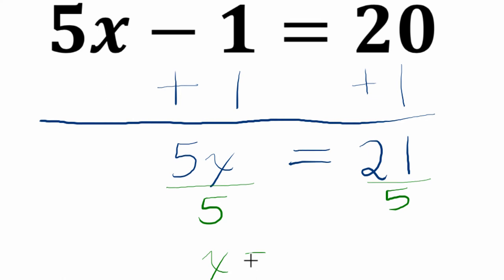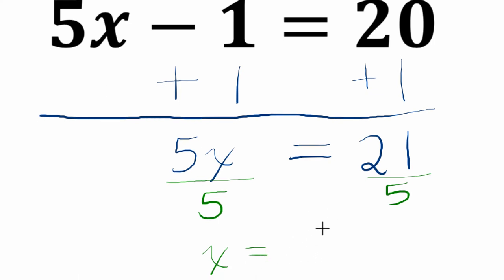So x equals 21 divided by 5. 5 goes into 21 four times with a remainder of 1. So 1 out of 5 is our remainder, which is 0.2. And that's our answer.